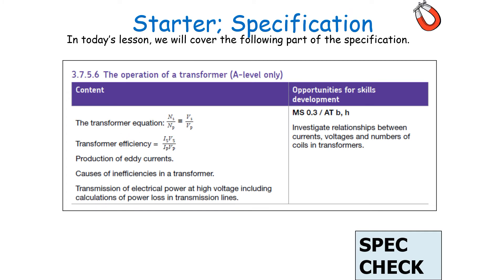In today's lesson, we're going to cover the following part of the AQA A-level physics specification: the operation of a transformer, and in particular the equations in this part of the specification.